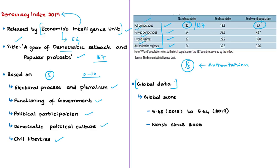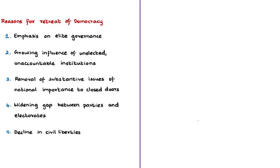As per the Democracy Index, the average global score for democracy fell from 5.48 in 2018 to 5.44 in 2019 — the worst average global score since the index was first produced in 2006. The index mentions important reasons for the retreat of democracy, including increasing emphasis on expert governance rather than popular participatory democracy, growing influence of unelected and unaccountable institutions, removal of substantive national issues to be decided behind closed doors, widening gap between political elites and national electorates, and decline in civil liberties including media freedom and freedom of speech.